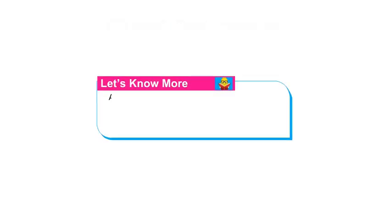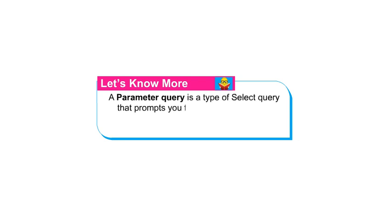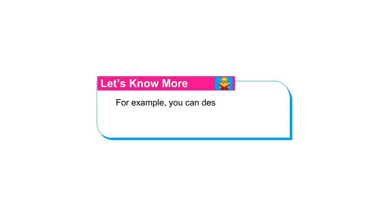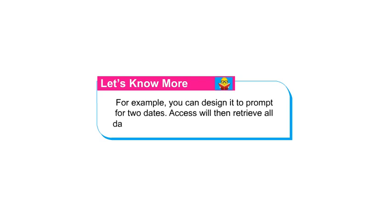A parameter query is a type of select query that prompts you for input before it runs. The query then uses your input as criteria that control your results. For example, you can design it to prompt for two dates, and Access will then retrieve all data with values between those two dates.